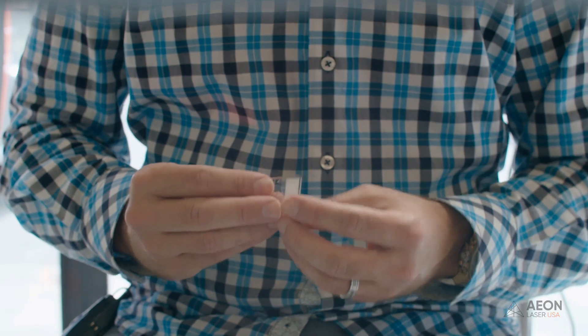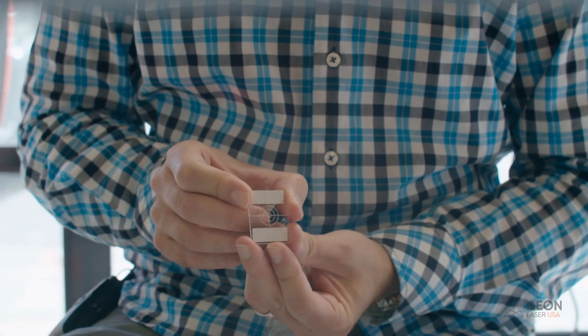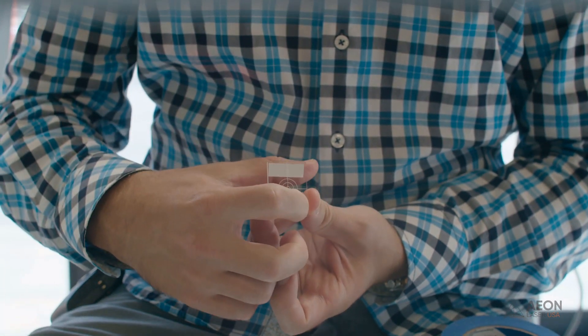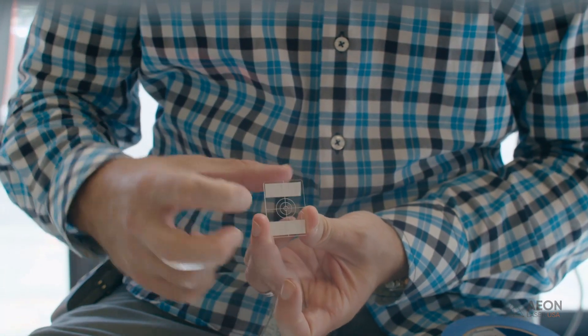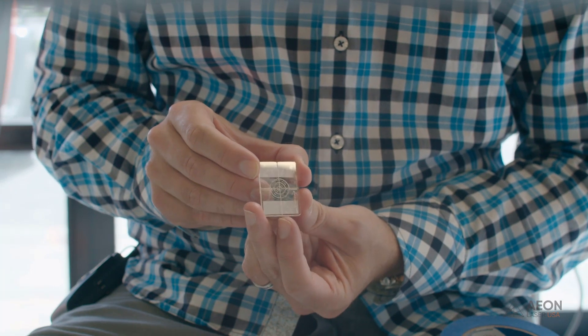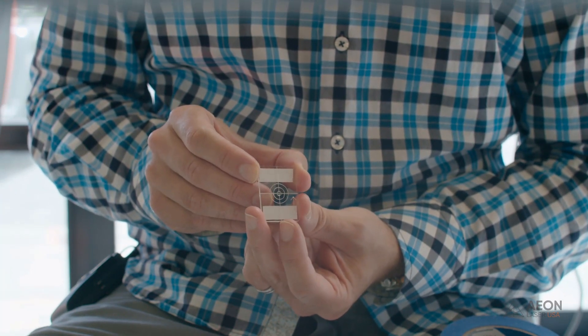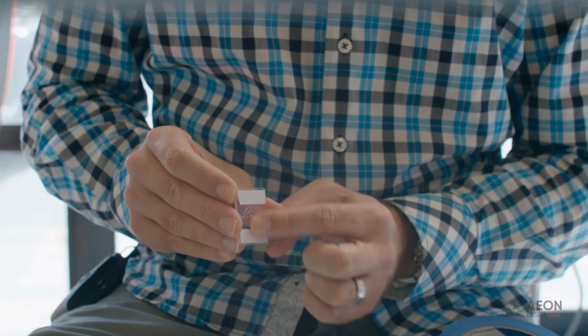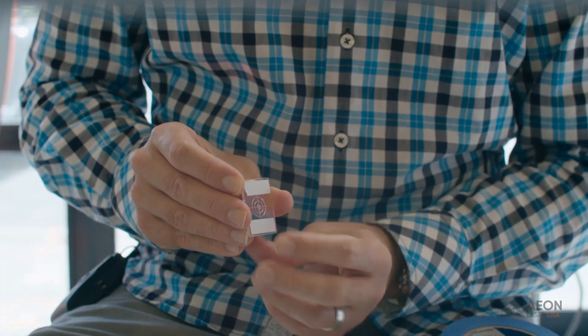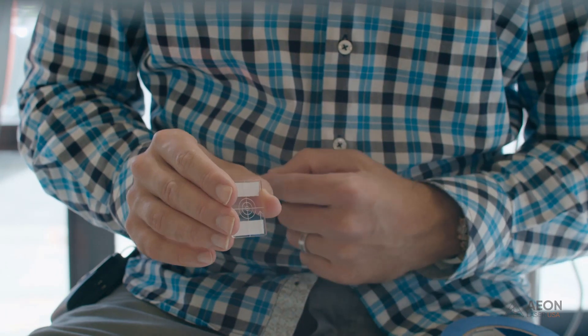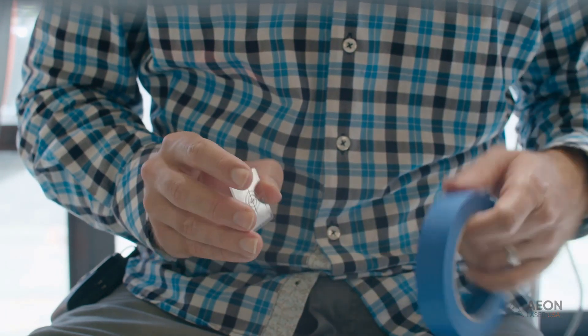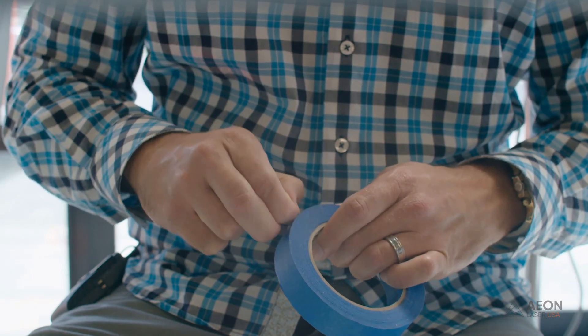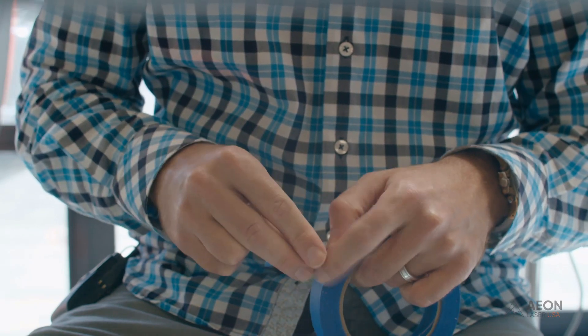So the first thing we're going to do is take the first acrylic target out of the toolbox. That's got a number one engraved on it with an arrow pointing up to show which way the target will be mounted into the machine. The backside of the target has some pieces of double-sided tape on it. And on the front side, we're going to be putting a piece of blue painter's tape on it.